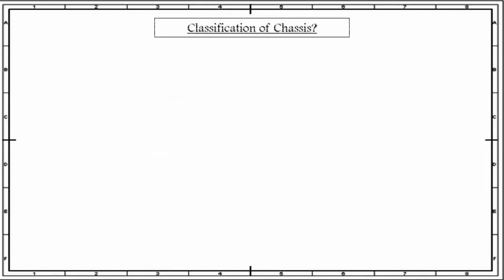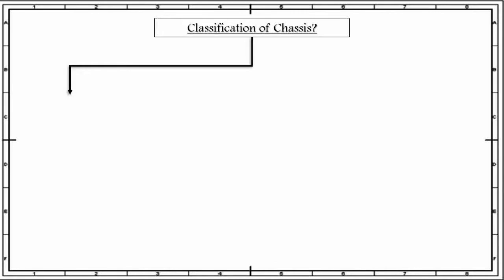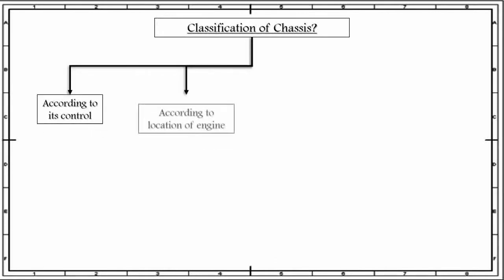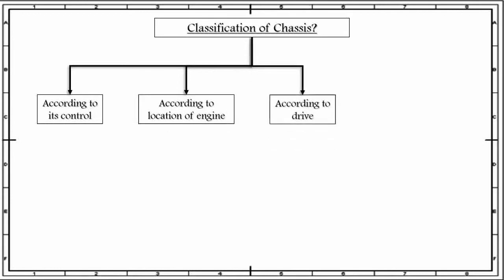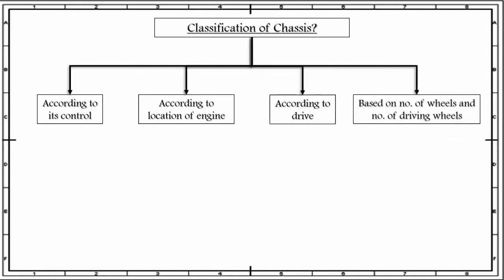Let us discuss how we can classify the different types of chassis present in the market. Chassis can be classified according to its control, based on the location of engine, according to the drive, and based on the number of wheels and number of driving wheels.